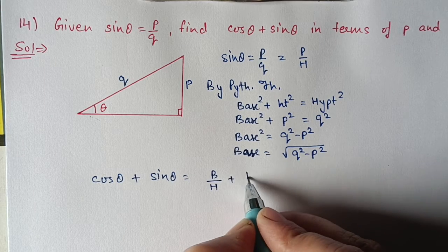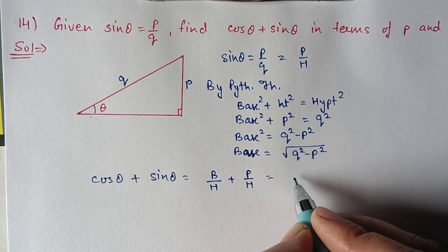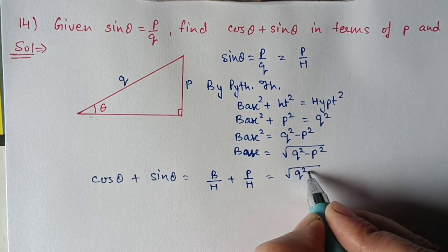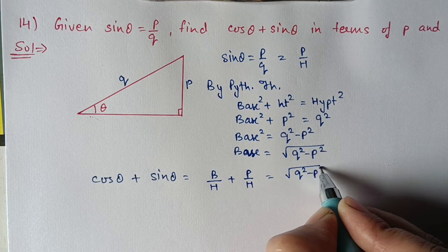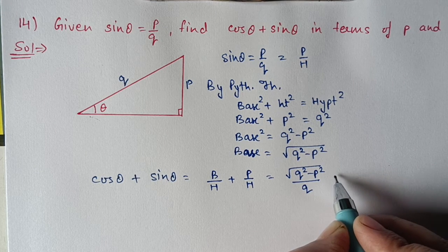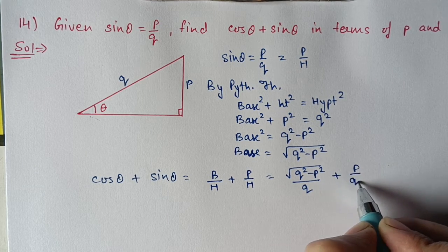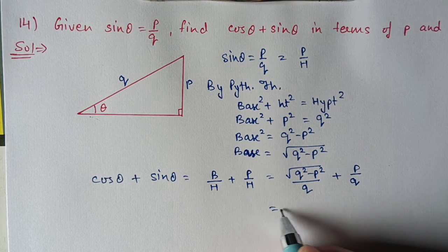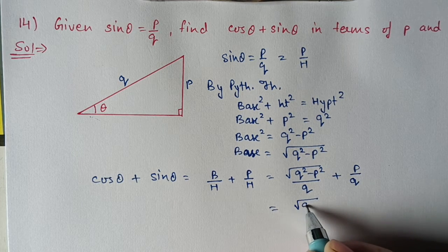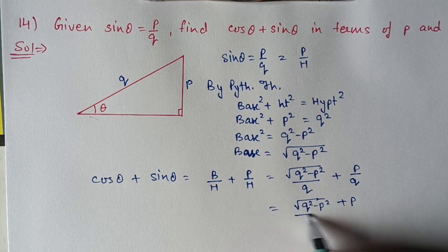Therefore cos θ plus sin θ equals root of (q squared minus p squared) upon q plus p upon q, which can be written as root of (q squared minus p squared) plus p, all upon q.